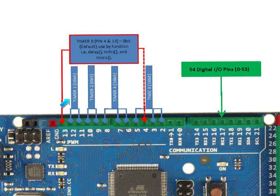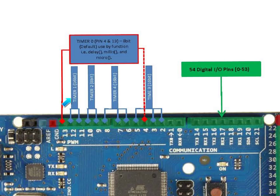Next is Timer 1, having a 16-bit resolution, which utilizes pin 11 and pin 12 when configured in the Arduino software. Take note that Timer 1 is utilized by the tone library of the Arduino software — each time a tone function is called, Timer 1 is enabled.